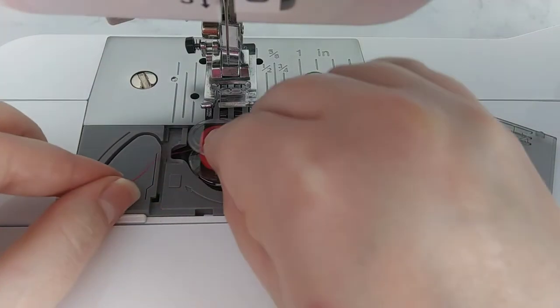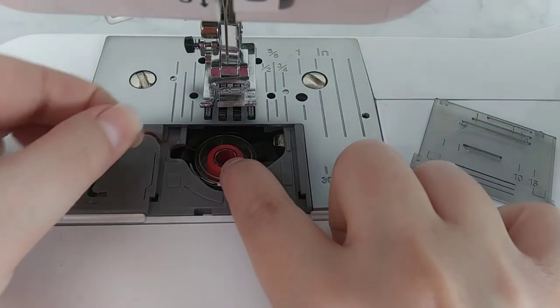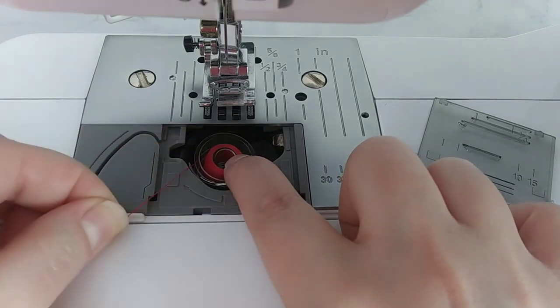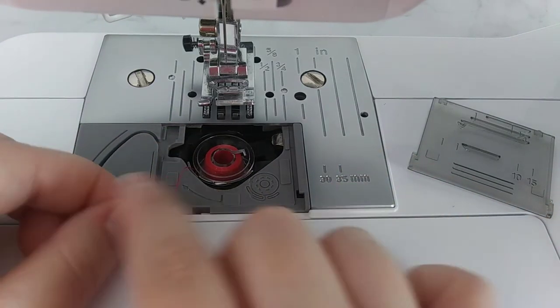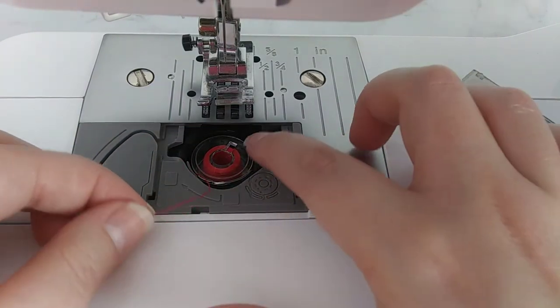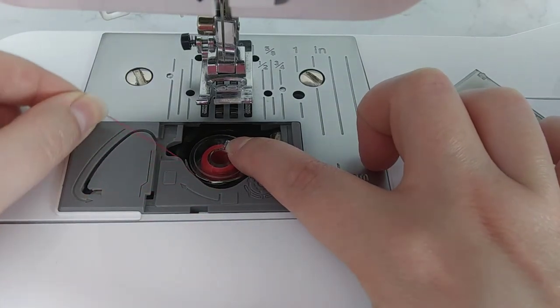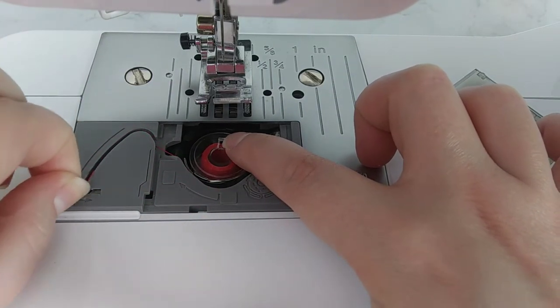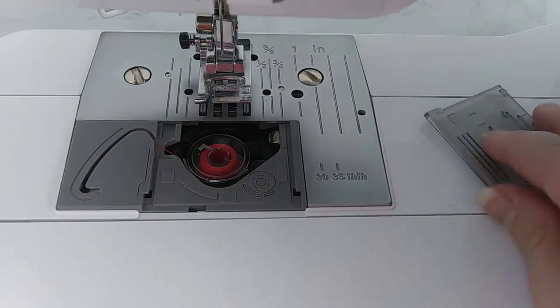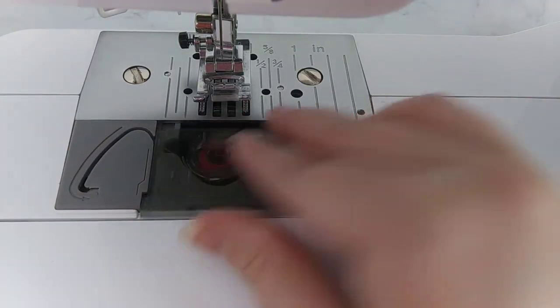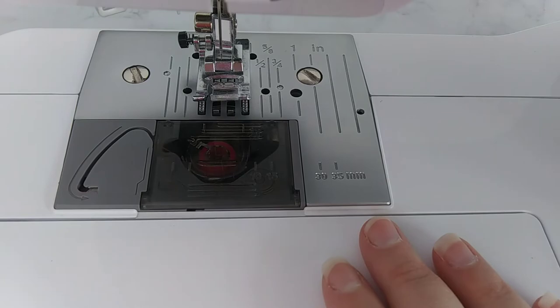So we're going to take it, slide it in, and there's a little hook right here that you slide it around, like so. And you just follow along, and you put the top back on. And there, your bobbin is in the sewing machine.